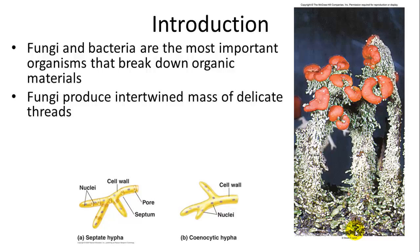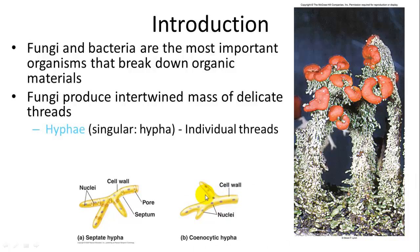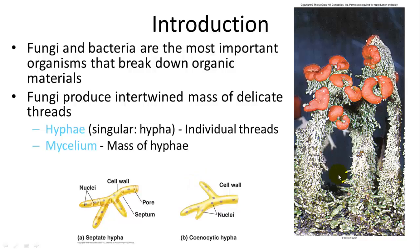Fungi produce an intertwined mass of delicate threads, and these delicate threads are called hyphae. Some of them can have cell walls between them — those are septate hyphae. And then some do not have separations between them, so it's kind of a long mass with multiple nuclei. These are microscopic structures, but they do make this mass of hyphae that you can see, and it's usually whitish in color. And that's called a mycelium.